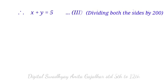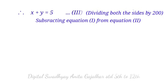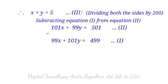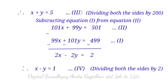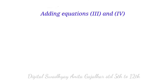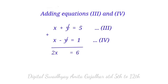Dividing both sides by 200. Subtracting equation 1 from equation 2: 101x plus 99y equal to 501, minus (99x plus 101y equal to 499). Signs change due to subtraction, giving 2x minus 2y equal to 2. Dividing both sides by 2: x minus y equal to 1 (equation 4). Adding equations 3 and 4: x plus y equal to 5, plus x minus y equal to 1, giving 2x equal to 6, so x equal to 3.